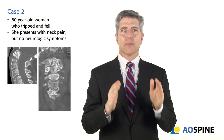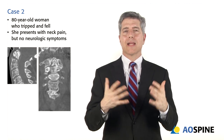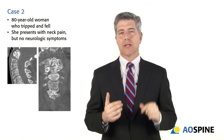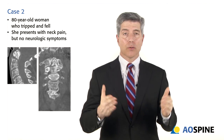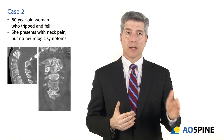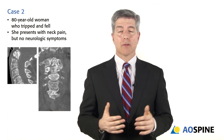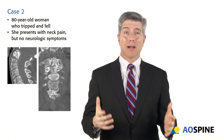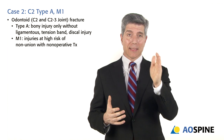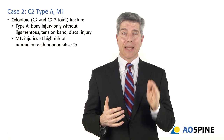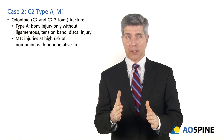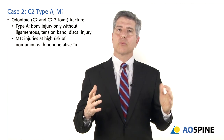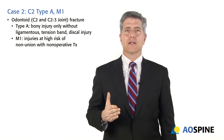Case two: an elderly person falls and has an odontoid fracture. The vertebral bodies are not translated, so it's not a C. The transverse ligament is not disrupted, so it's not a B. It's a type A injury. But with non-operative treatment it's probably not going to heal, so we apply modifier M1 — likely to go on to non-healing. When someone sees M1, we think about being more aggressive from a surgical perspective.